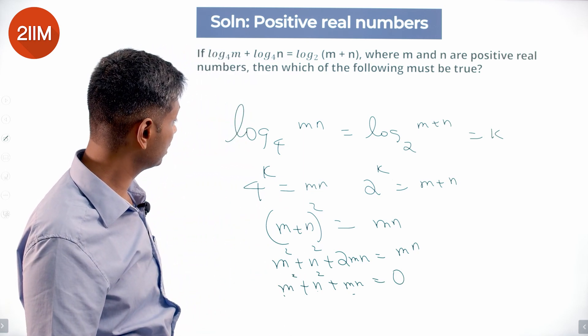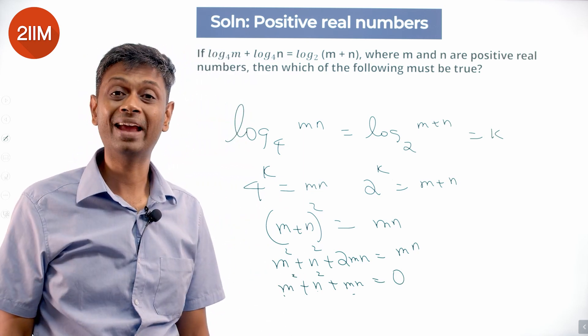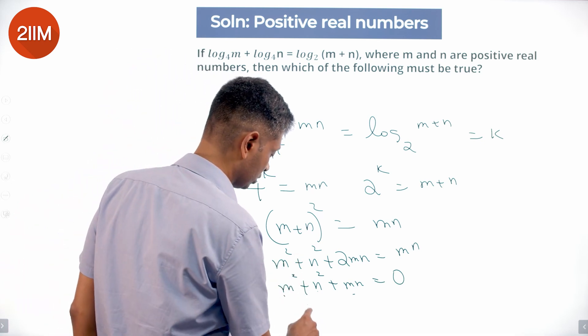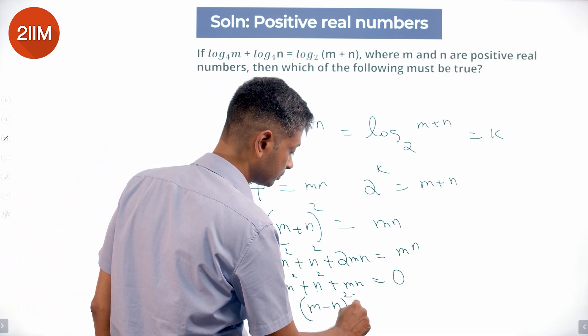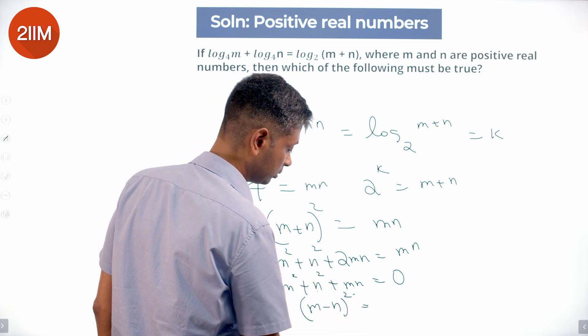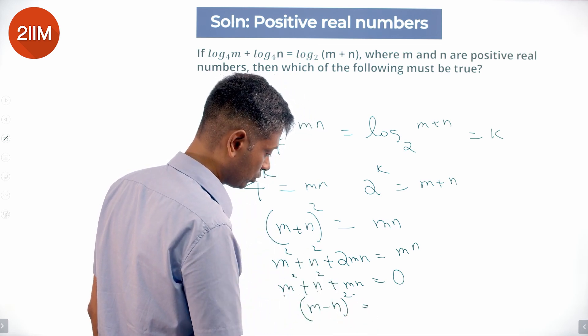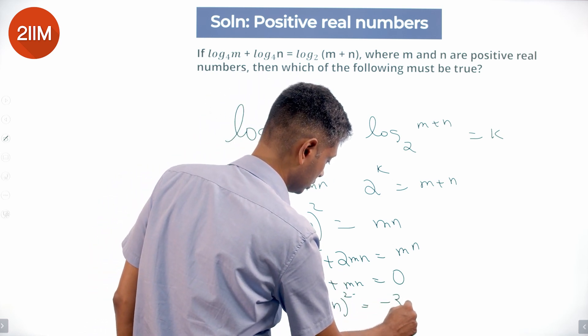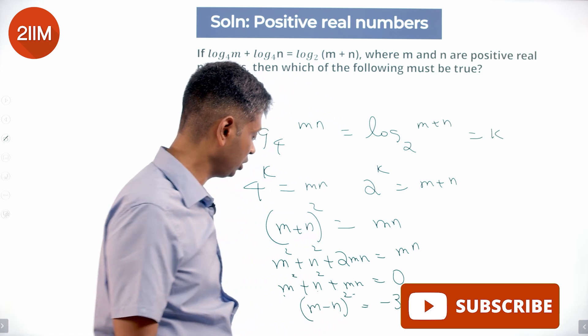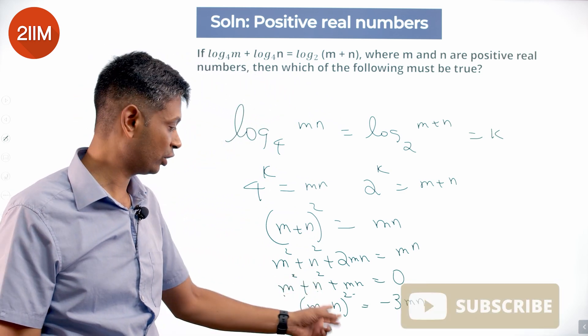m square plus n square plus mn will not equal 0 ever. Another way of rewriting this is to say m minus n whole square, which is m square plus n square minus 2mn, equals minus 3mn.